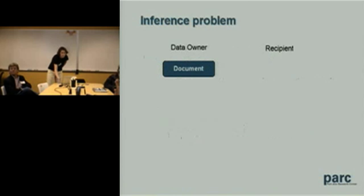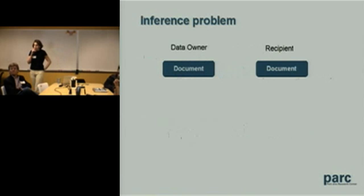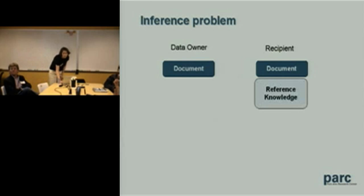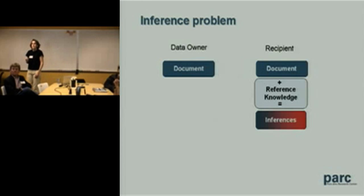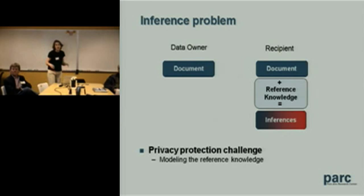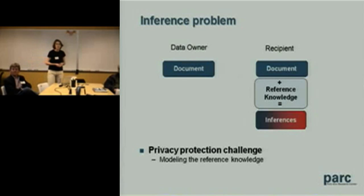More formally, the problem we're looking at is that when you share a document with someone, they don't just have the document — they have some other reference knowledge. They have information they already know, they have the web, all sorts of resources. That can lead to unintended inferences. The challenge is to figure out how to model that reference knowledge as well as you can, so that you can anticipate these inferences and maybe protect the content better.